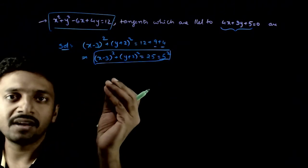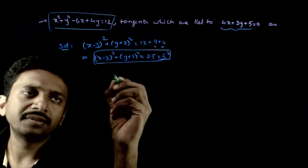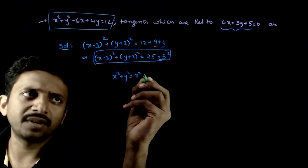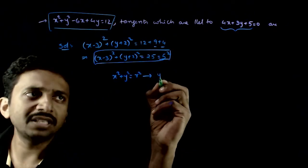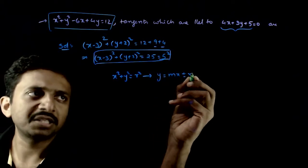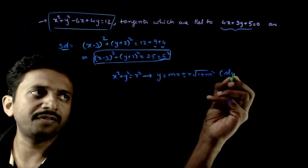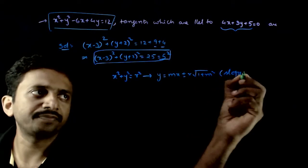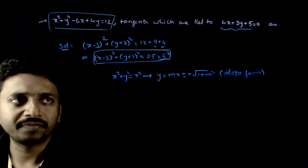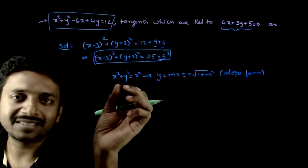Now, what is the general form of a tangent to this circle? If x squared plus y squared is equal to r squared, then the general form — the slope form of tangent — is y is equal to mx plus or minus r times root of 1 plus m squared. My circle is not exactly in this form.